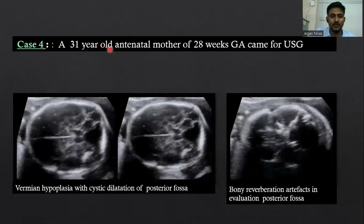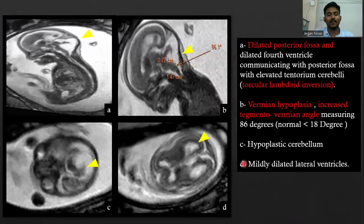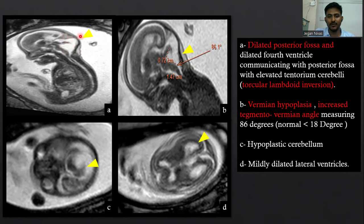Case four: a 31-year-old antenatal mother with 28 weeks of gestation. She came for USG, which showed vermian hypoplasia with cystic dilatation of the posterior fossa. Reverberation artifacts impaired evaluation of the posterior fossa. The patient underwent MRI, which revealed a dilated posterior fossa with dilated fourth ventricle communicating with the posterior fossa, with elevated tentorium and cerebellar hypoplasia. There is torcular-lambda inversion noted in this case.